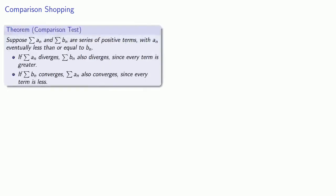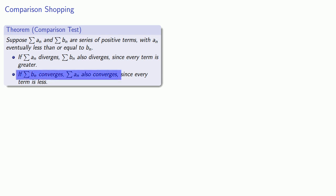Suppose that I have two series of positive terms with a_n eventually less than or equal to b_n. If the sum of the a_n's diverges, then the sum of the b_n's also diverges since every term is greater. On the other hand, if the sum of the b_n's converges, then the sum of the a_n's also converges since every term is less.